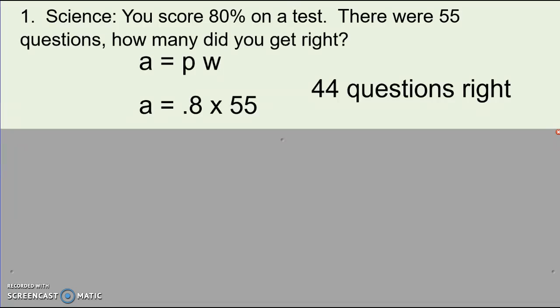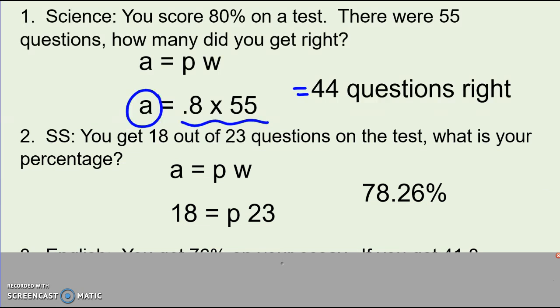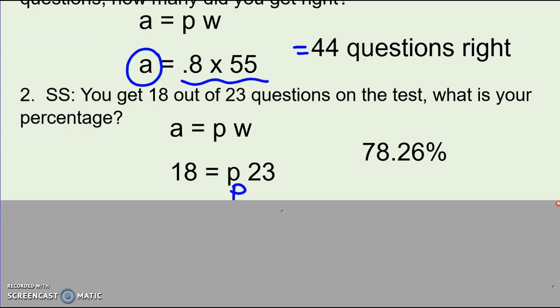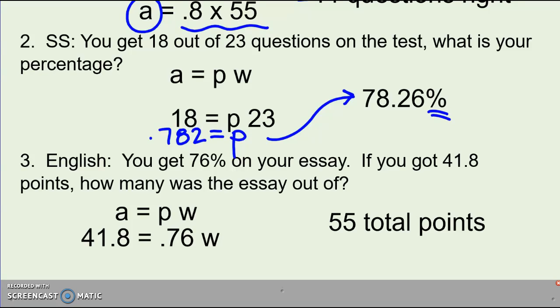Number one, my work should look like that. I don't have to solve for A. It's already by itself, so I just do this math, and I got 44 questions right. Make sure in any story problem that you have a label or units on your answer. Number two, I was solving for the percent. When I solved this, I actually got—it would look like this. In the equation, don't leave your answer as a decimal. This is a little bit confusing. Whenever you solve for the percent in this problem, turn it into a percent with a percent sign. You got to move the decimal place over anytime you're solving for P. And the last one, English, I was solving for the whole. How many total points was it out of? So I had to solve and get W by itself, and I got 55 total points.